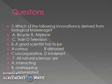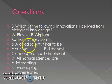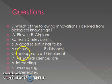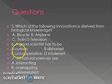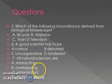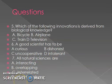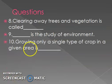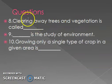The answer is B — airplane. Question five: A good scientist has to be — curious, dishonest, uncooperative, or intolerant — the answer is curious. Question six: All natural sciences are — interacting, overlapping, or interrelated — the answer is D, all of the above.